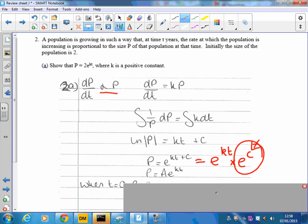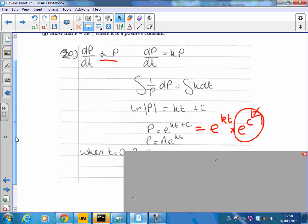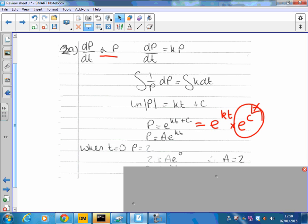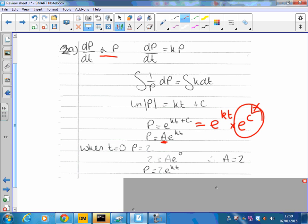We're given some initial information. We're told that initially, so that means when t equals 0, the population is 2. So let's substitute that in. So I've got 2 equals ae to the, well, k times 0 is just 0, therefore as e to the 0 is 1, a is 2. And rewriting, substituting that back in, a equals 2 in here, that gives me the result we've asked. So that's 2 part a all done.